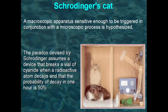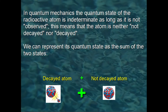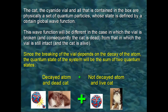It is possible to establish that at a certain instant the atom will have a 50% probability of having decayed and 50% of not having decayed. Just as in the case of the tunnel effect, the state of the radioactive atom, as long as it is not observed, will be neither decayed nor not decayed, and its wave function will be the sum of two parts: one that describes the decayed atom, and the other that describes the not-decayed atom. The cat, the cyanide vial, and everything in the box are physically a set of quanta whose state is defined by a global wave function. This wave function will be different depending on whether the vial is broken and the cat is dead, or the vial is intact and the cat is alive. Since the breaking of the vial depends on the decay of the atom, the global wave function can be described as the sum of two functions: one corresponding to the dead cat with the decayed atom, and the other corresponding to the live cat with the non-decayed atom.